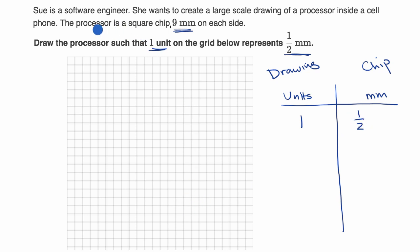They tell us that the processor is nine millimeters on each side. So that is how many times as many millimeters? Well, to go from one half to nine, you have to multiply by 18. So that's going to be 18 times as many units as well.